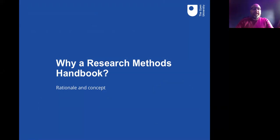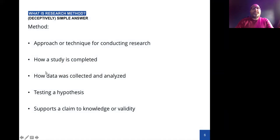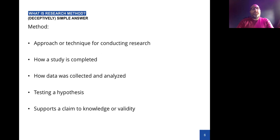Why did we produce a research methods handbook? The place to start is: what is a research method? The deceptively simple answer is that's just how you do research — it's the approach you use, the way you collected and analyzed your data. Often it's presented as a hypothesis that's tested. But underlying all this is the idea that someone is claiming to have produced some sort of new knowledge. The research method is what provides the validity for that claim. Because you follow a particular method, and the method is sound, the outcome is valid. A lot hangs on this idea of validity.